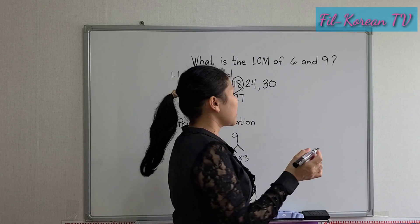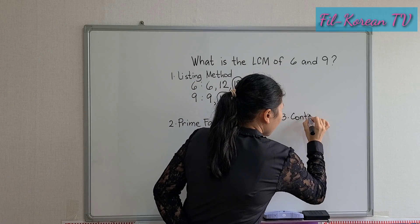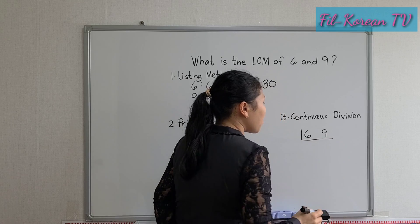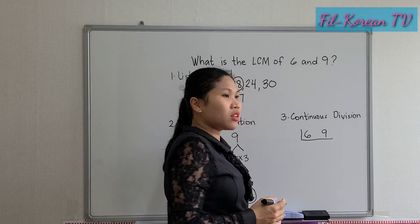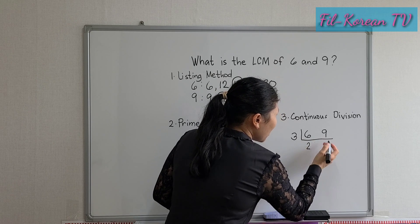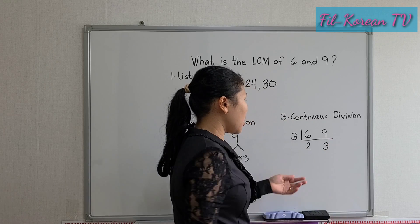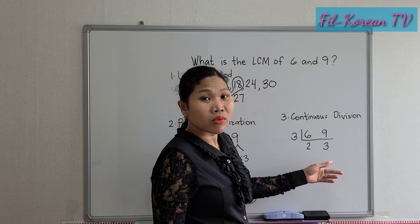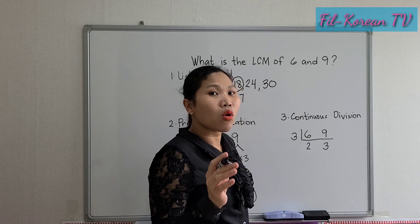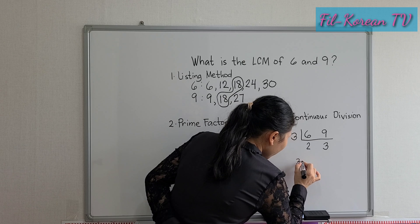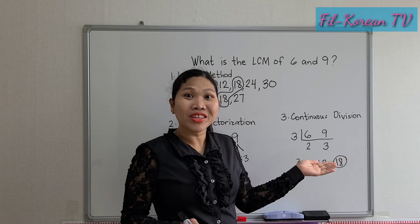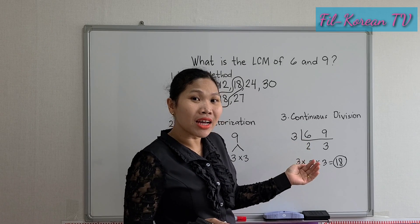The next method is the continuous division method. In this method, we will divide the given numbers by their prime factors. So 6 and 9 are both divisible by 3. We divide by 3: 6 divided by 3 is 2, and 9 divided by 3 is 3. Since 2 and 3 are both prime numbers, we will not divide them anymore. Next, we multiply the prime divisor and the quotients: 3 times 2 times 3 equals 18. This is how continuous division is done to get the LCM.